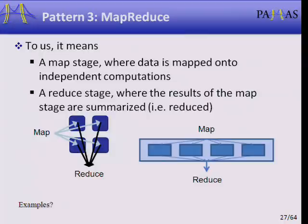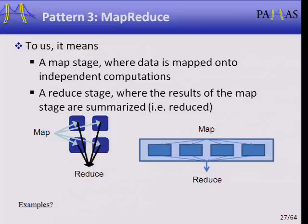MapReduce is used largely at Google. The term as we use it goes all the way back to its initial use in Lisp. In the map stage, data is mapped onto independent computations. The key thing is that these data sets are all independent. Then in a reduce stage, we pull these all together and aggregate the results.